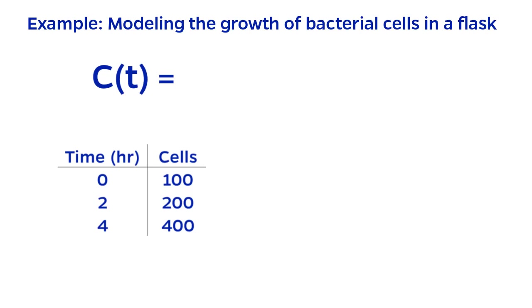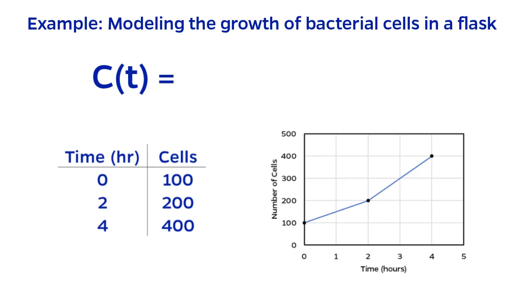Let's say that we also have three given data points. At the start, or time zero, there are 100 cells. Two hours later, there are 200 cells. And four hours total, there are 400 cells. Plotting this data regularly confirms the suspicion that bacterial growth does not seem linear.